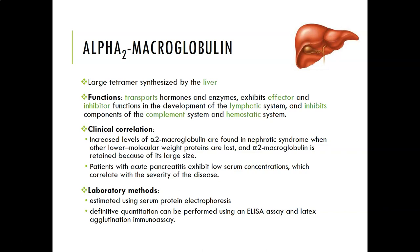Alpha-2-macroglobulin is a large tetramer synthesized by the liver. Its function is to transport hormones and enzymes; it also exhibits effector and inhibitor functions in the development of the lymphatic system, and it inhibits components of the complement system and the hemostatic system. Increased levels are found in nephrotic syndrome when all other lower-molecular-weight proteins are lost, because this protein is so large it cannot pass through the glomeruli even when damaged.